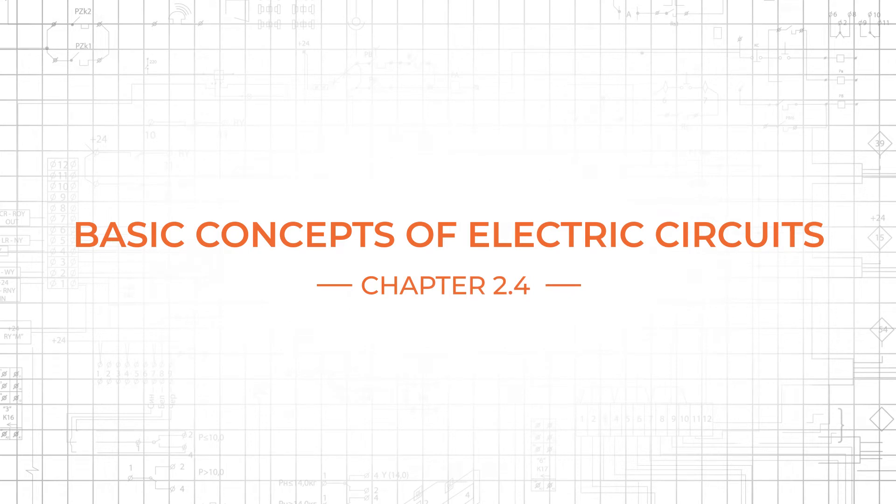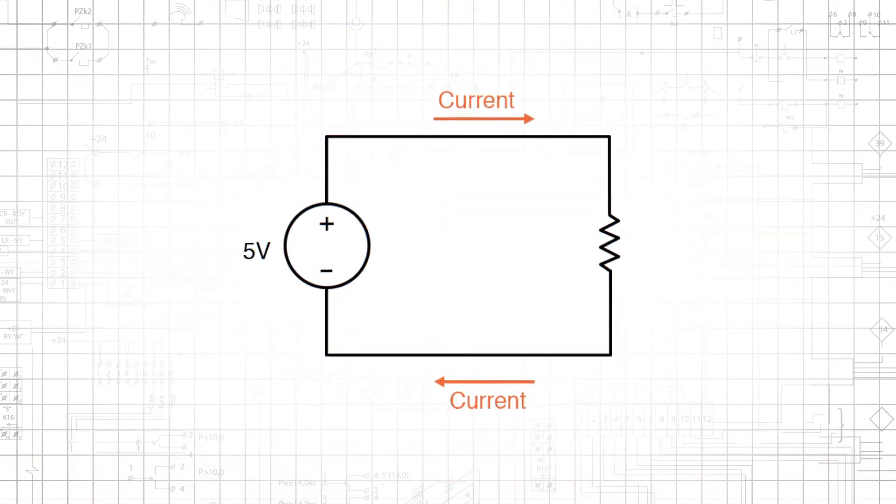Electronic design is fundamentally about electric circuits, that is networks that allow electric charge to start at a source, move through a continuous pathway of conductors and components, and return to the source.